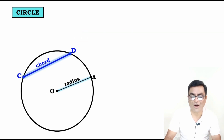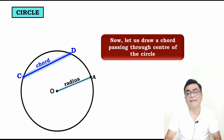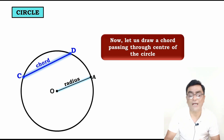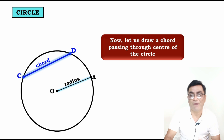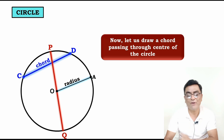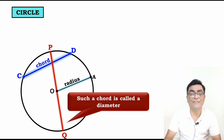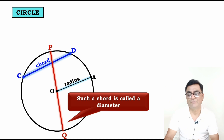We have covered radius and chord. Now let us draw a chord passing through the center of the circle. When a chord passes through center O, what does it become? Such a chord is called a diameter. PQ is a diameter.